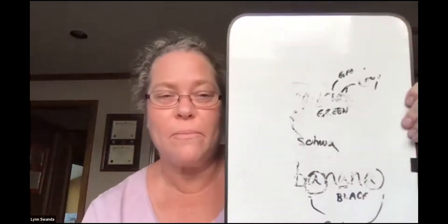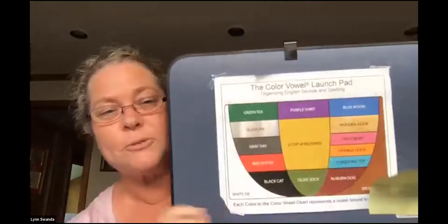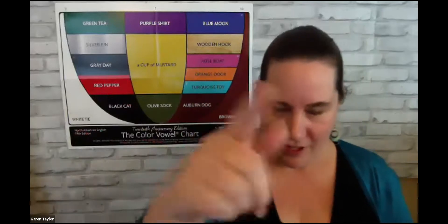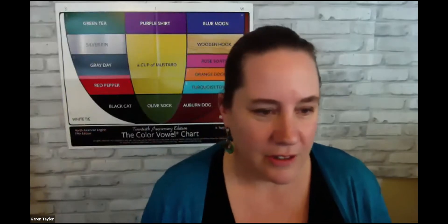Karen asks Lynn to show her chart — Lynn flips over a small Color Vowel chart, and also has a big one on an easel. The question comes up: how do we show the chart online? Karen needs to do that — she has it behind her. Jennifer often moves her laptop to show the chart on the wall next to her. How else do people get the chart shown to their students?